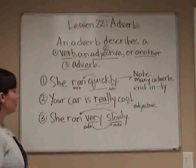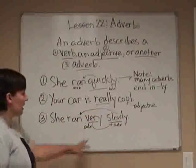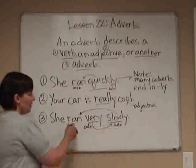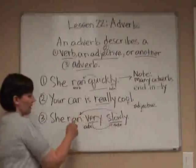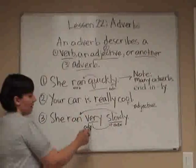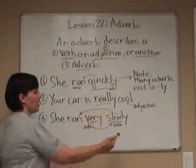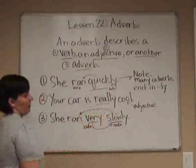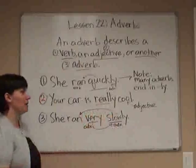Number three, she ran very slowly. So we have a double adverb. The ran — first off, we have slowly for the ran, and then we're further describing the adverb with very. So she ran very slowly.